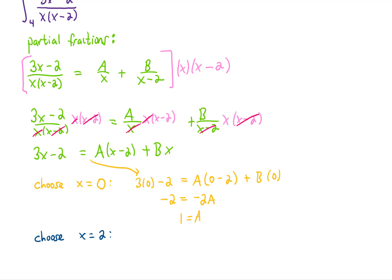And you might notice that choosing x equals 2 is going to do something very similar. Plugging in x equals 2 is going to make our A term go to 0, and we can pretty quickly solve for B.